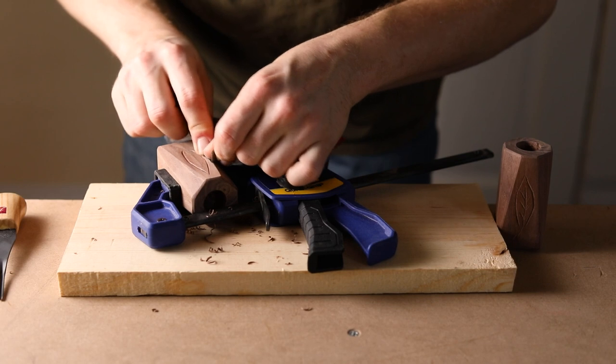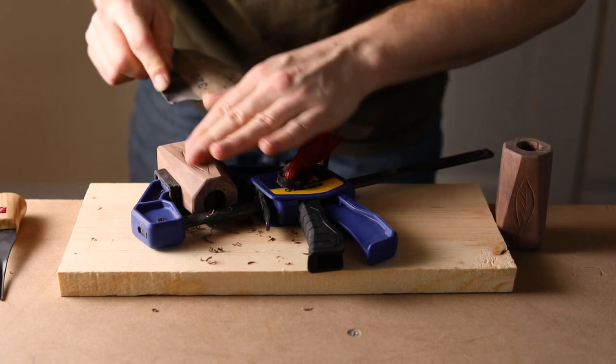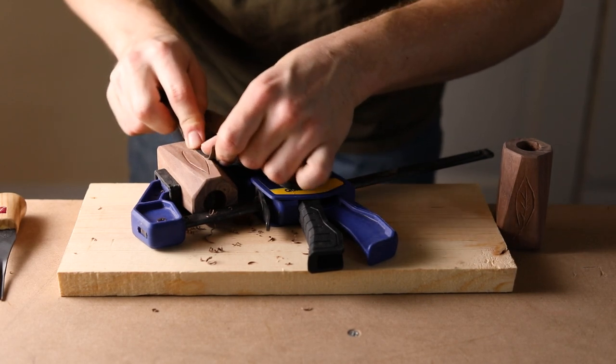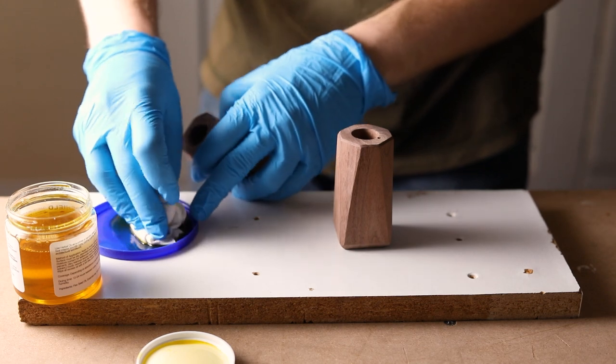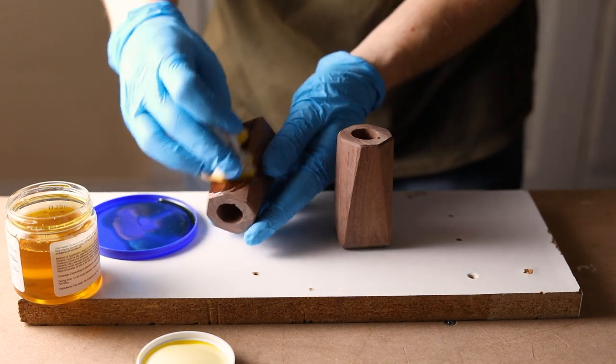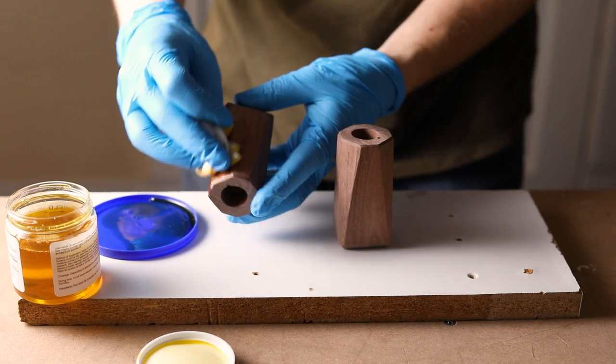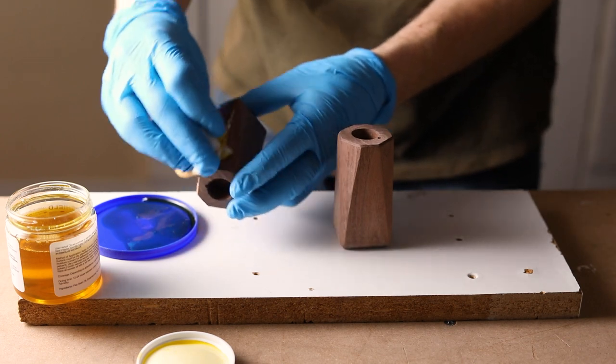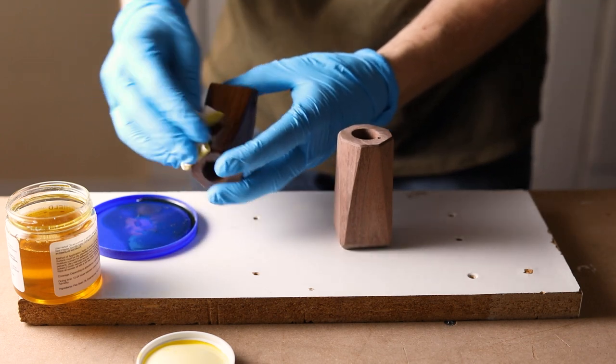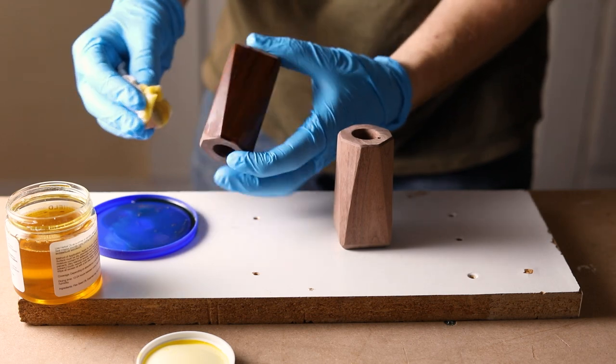With everything sanded and the leaves carved, these candle holders are ready for some oil. I picked up a little sample of a flaxseed oil finish to try out. It's non-toxic, low odor, and even food safe. I applied a very generous amount, let it soak in for a while, then I wiped off the excess.